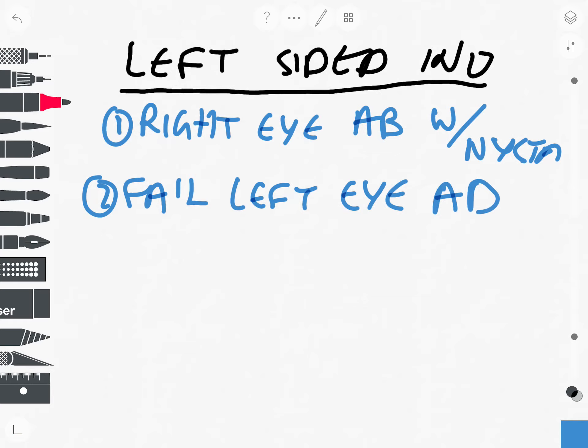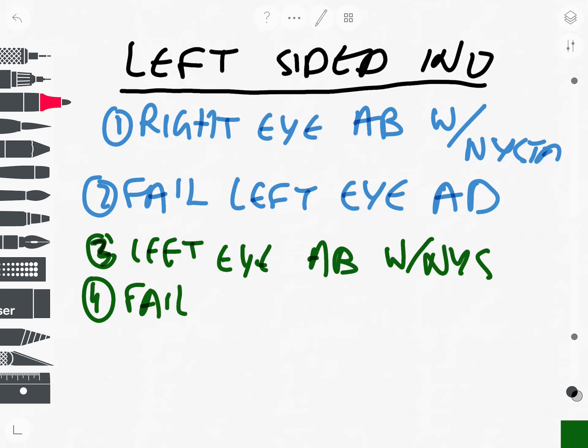And in the case of right-sided INO, you get left eye abduction with nystagmus, and you get failure of right eye adduction.